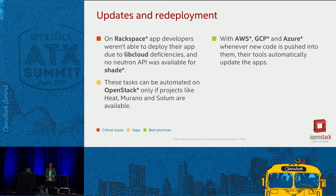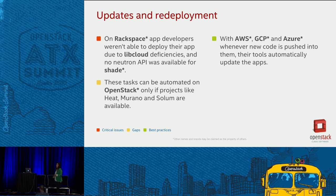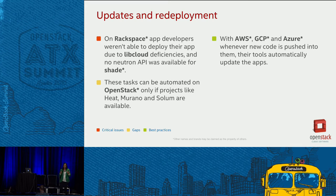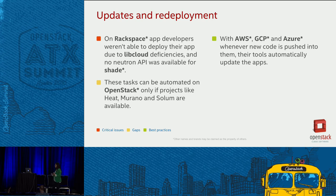For updates and redeployment — something that happens every day — AWS, Google Cloud, and Azure will automatically handle it with a single code push to the cloud. In OpenStack you can do the same, but only if you prepare your scripts and have some projects available in your cloud, for example Heat, Murano, or Sol.